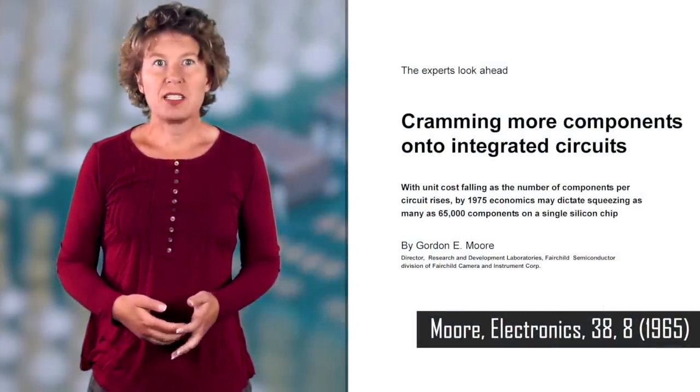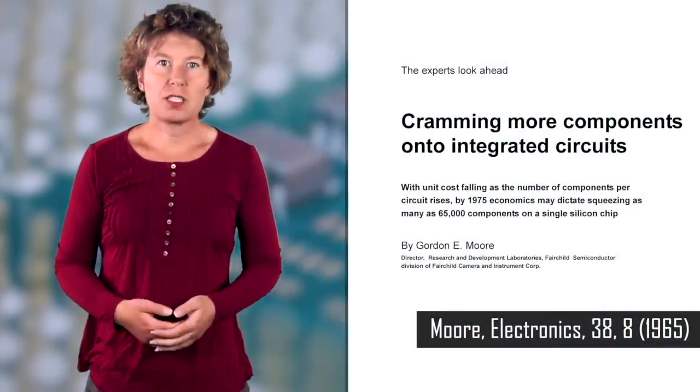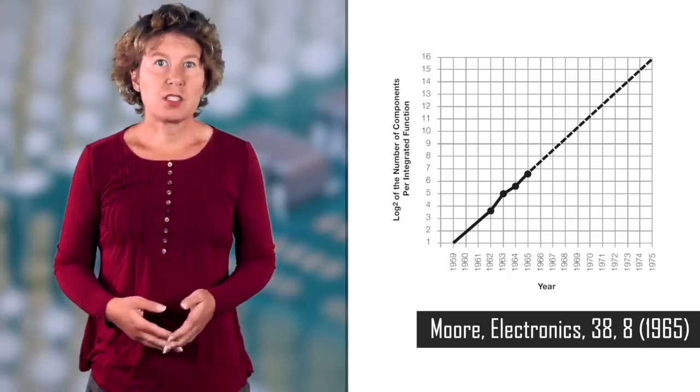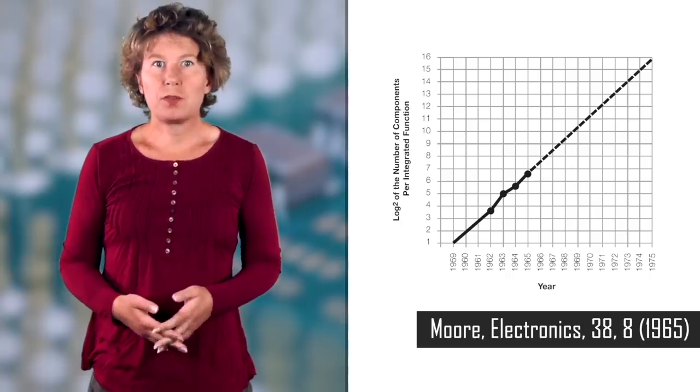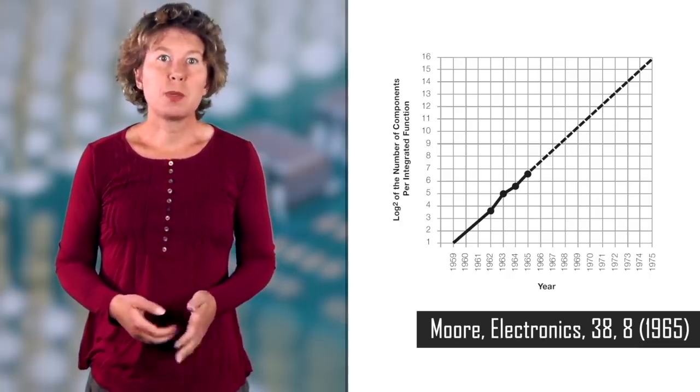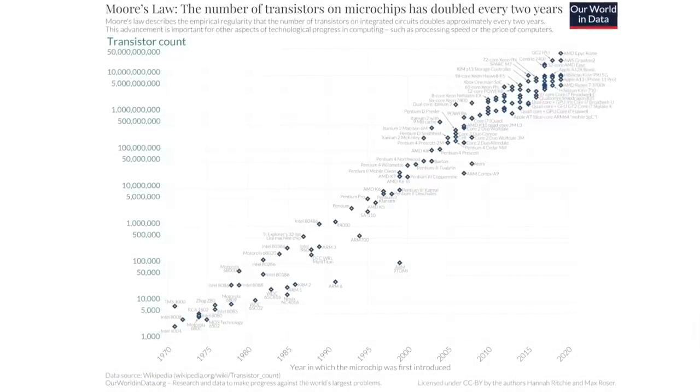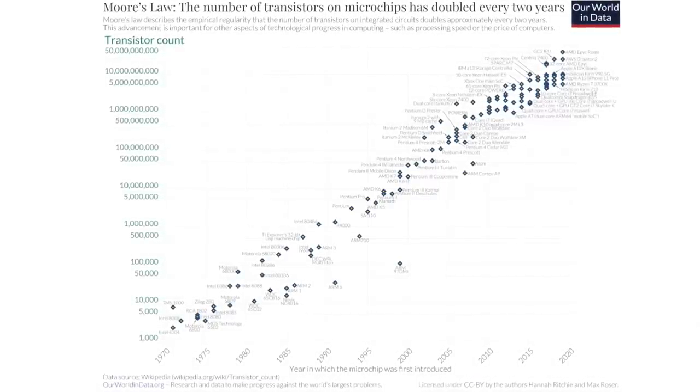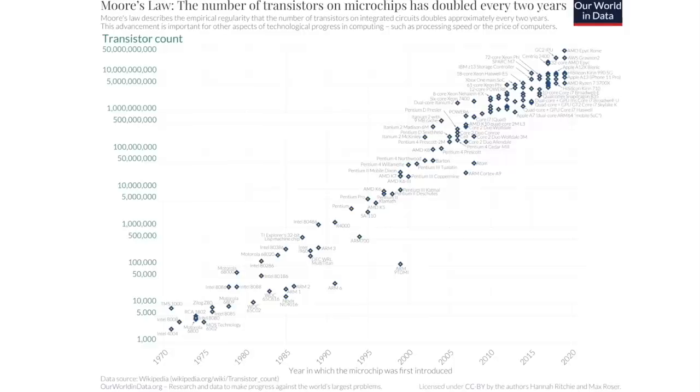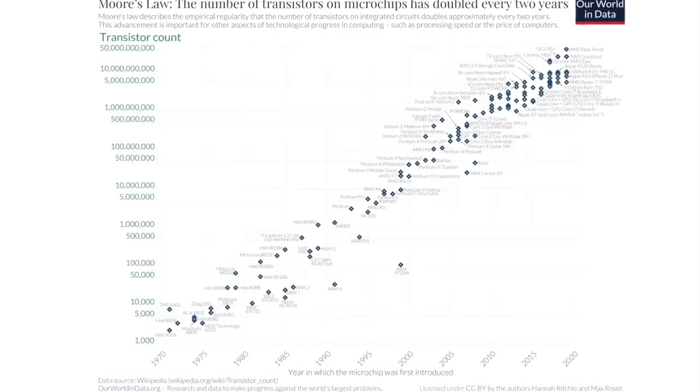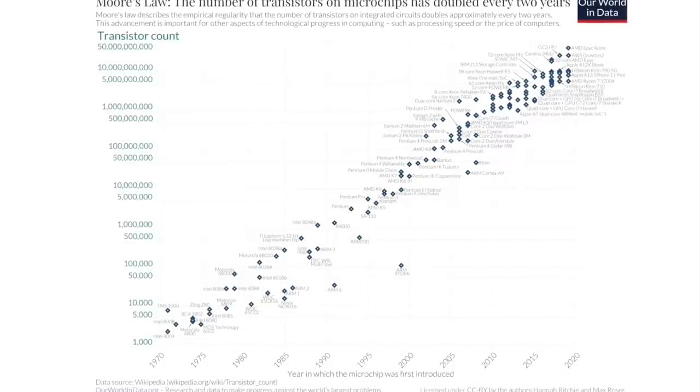In 1965, Gordon Moore, one of the brains behind Intel, noticed something interesting. The number of transistors on a microchip was doubling roughly every two years. This became known as Moore's law. And as the size of transistors shrank, the number of transistors that could be put onto a single chip increased from roughly 5,000 in the 1970s to more than 50 billion today.